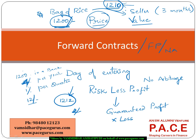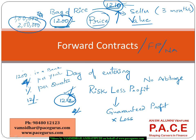You are making a guaranteed profit of 2 rupees per transaction. Now imagine doing the same across 1 lakh such bags — without taking any risk, you are making a profit of 2 lakhs in this contract. Because this difference is assured, we are able to make an arbitrage. So probably the better thing should have been that instead of 1210, the forward price should have been determined based on a no-arbitrage scenario.